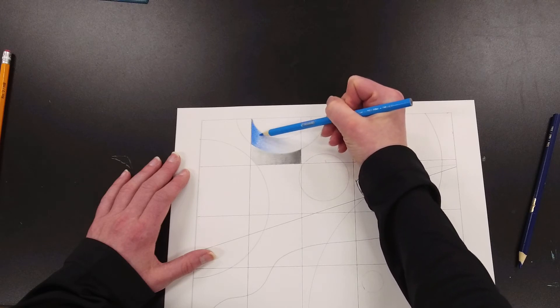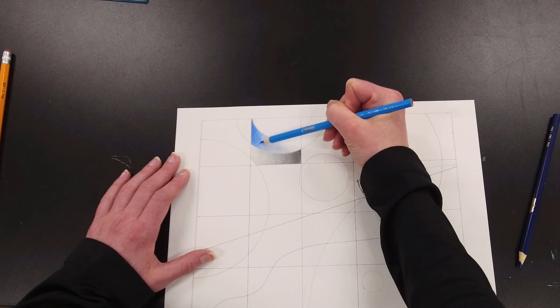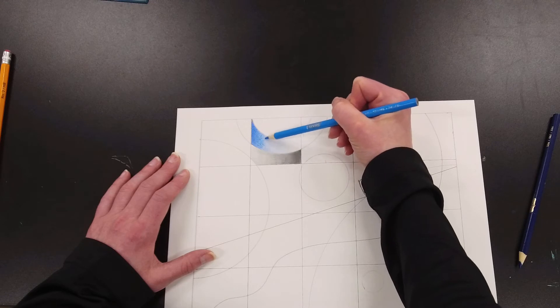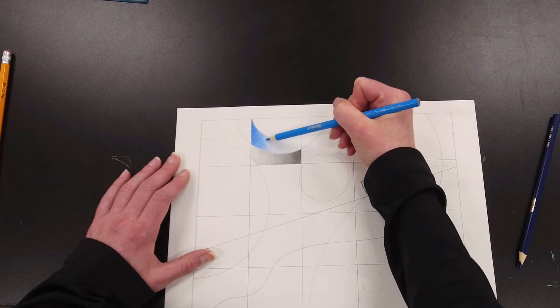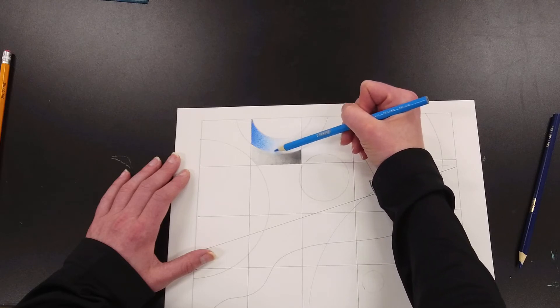Another reason you don't want to press down too hard on those first couple of layers is because your paper has something called a tooth to it, which just means that it has a little bit of texture. If you press down too hard too early on, then you have kind of flattened the texture of the paper and it will not hold subsequent layers as well.